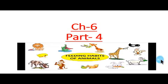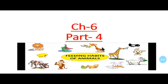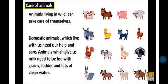Good afternoon students, how are you? I hope all are fine and safe at your home. Welcome in our video. Today we are going to continue our chapter number 6, that is feeding habits of animals. Yesterday in previous videos, we discussed different categories of animals — herbivores, carnivores, and omnivores animals — and different feeding habits. Today we will continue chapter 6 and discuss our topic: care of animals, which is on page number 45 in your science book.